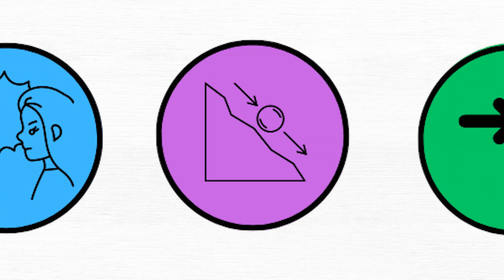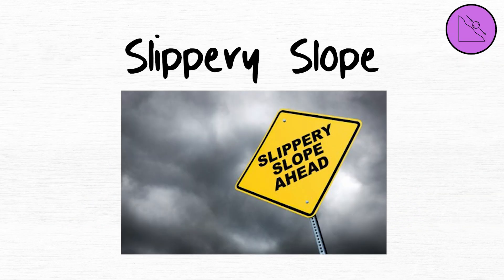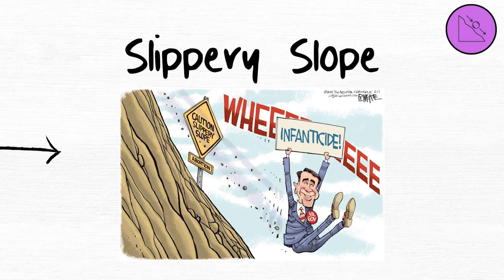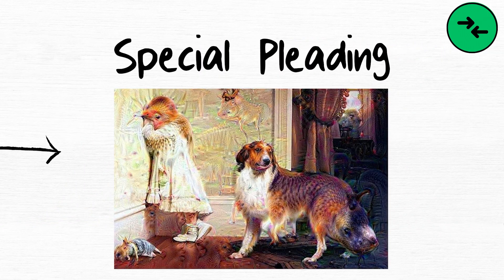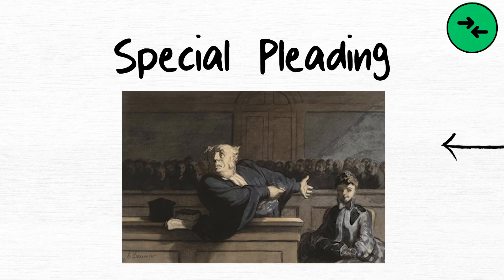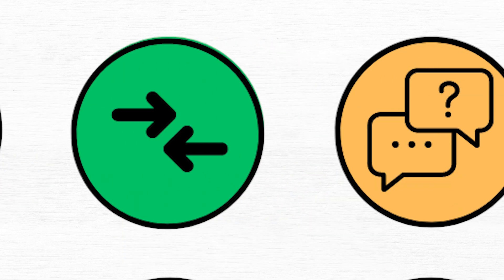Slippery slope. Slippery slope arguments suggest that one action will lead inevitably to a series of undesirable consequences. Special pleading occurs when one applies different standards to oneself compared to others.